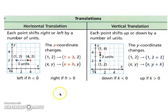Let's take a closer look at translations. A horizontal translation - each point shifts right or left by whatever number of units we're talking about. So the x coordinate changes. For example, if you have (1, 2) and you're going to go plus 3, it's only going to be added to your x value because that's the value that's changing. Left would be if h is less than 0 and right would be if h is more than 0.